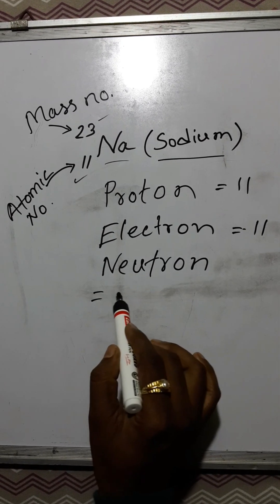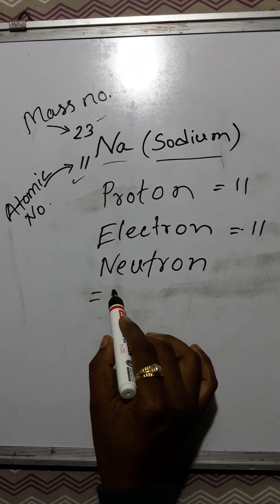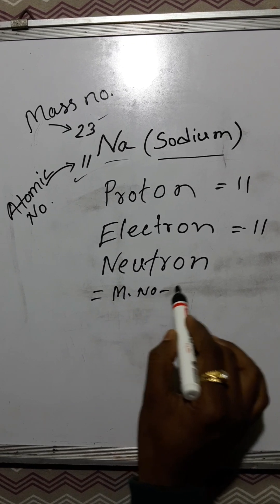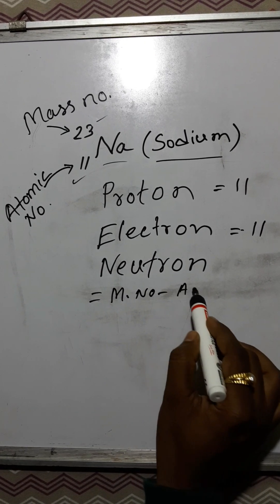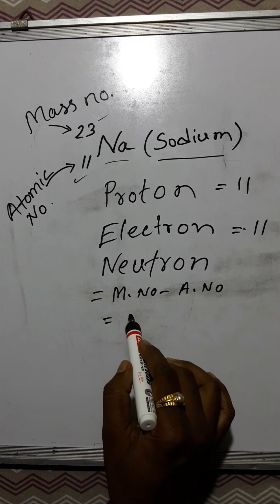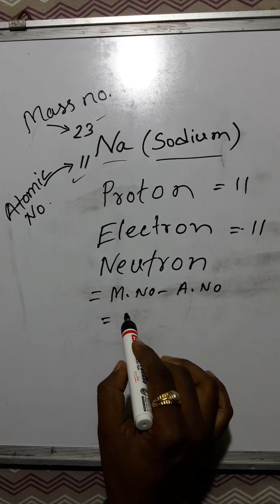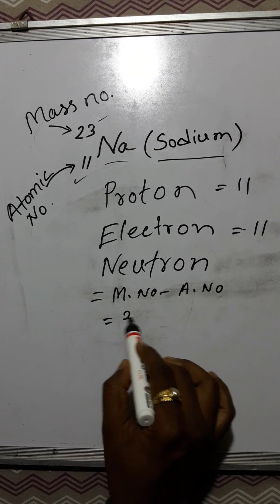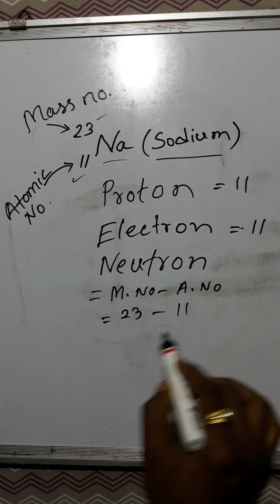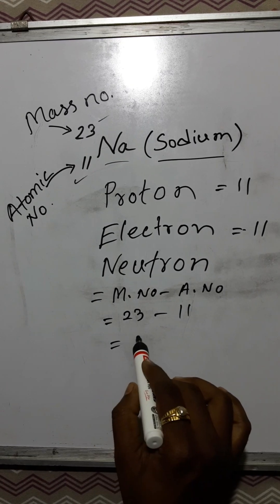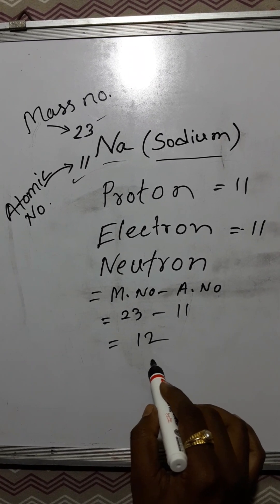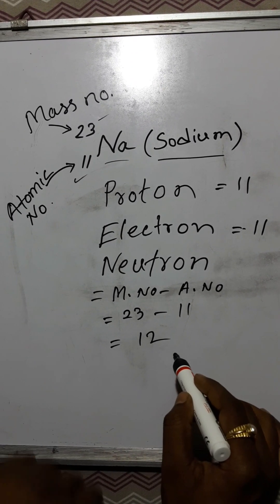To find the neutron number, we use the formula: mass number minus atomic number. The mass number of sodium is 23 and the atomic number is 11, so it comes to 12. So, 12 is the neutron number of sodium.